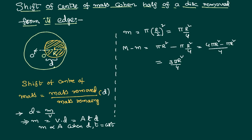The distance between the original center of mass and the center of mass of the removed portion: we know the original center of mass is at O, and the removed disc's center of mass is at its own center. The distance between these two points is the radius of the removed disc, which is R/2.